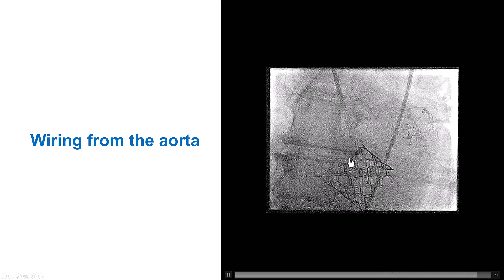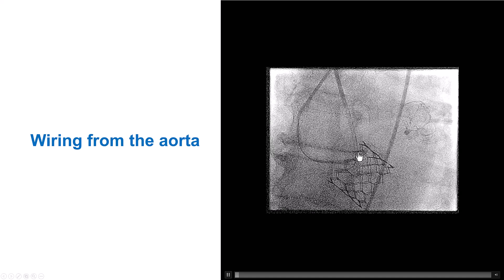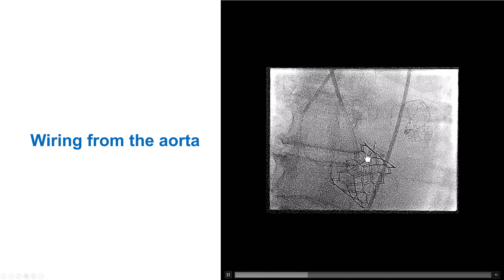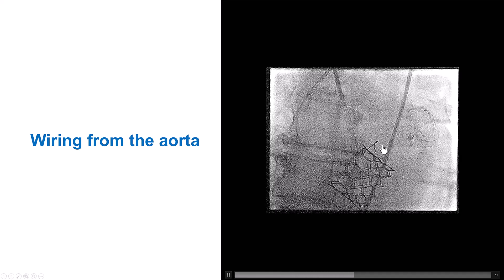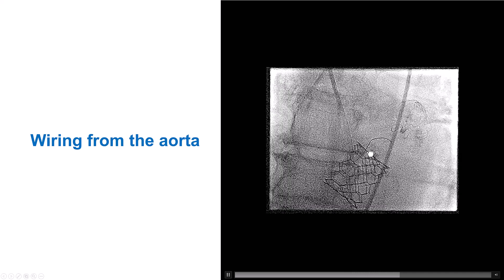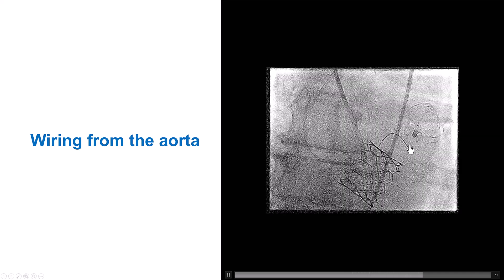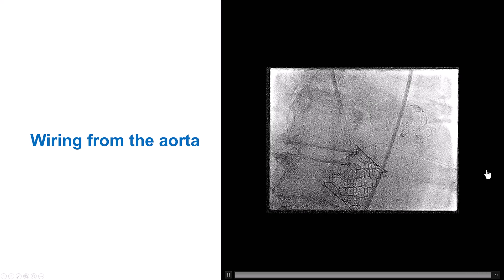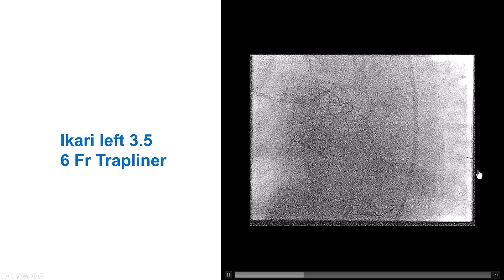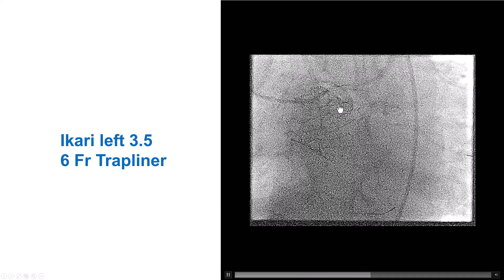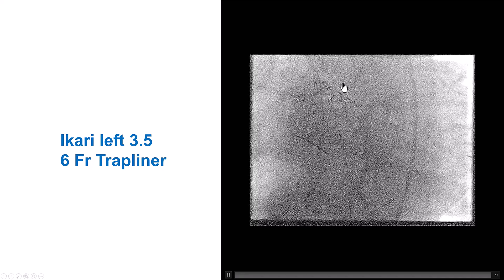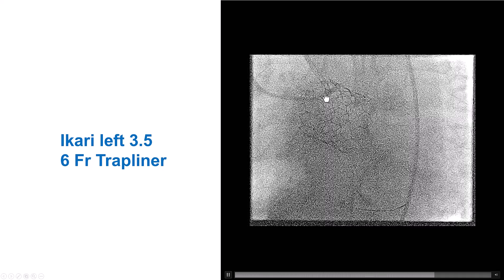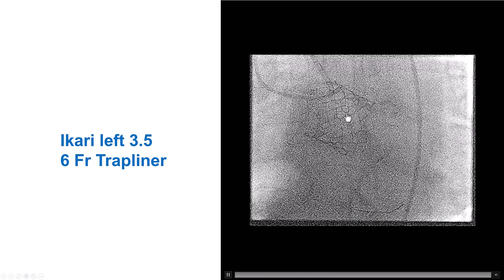Engaging the left main was challenging — we could not get the guide close, but we were able to advance a guide wire that went from the aorta into the coronary, appearing to go into the course of the circumflex. We then used a guide extension, which is essential for engaging vessels in patients with previous TAVR. This was a Sapien valve.